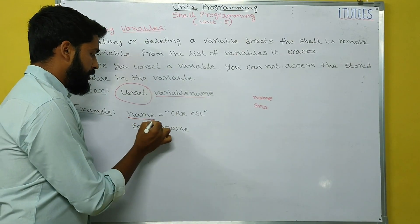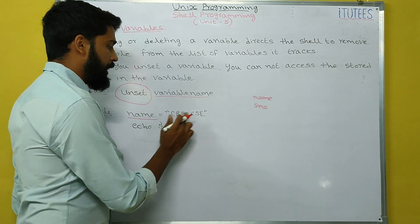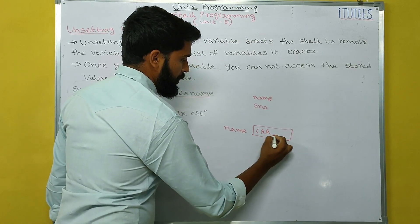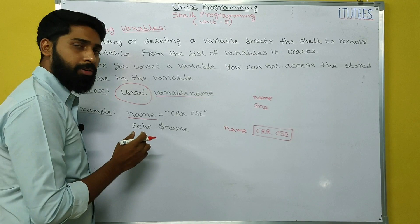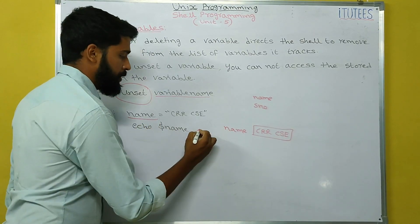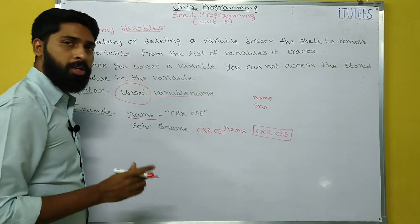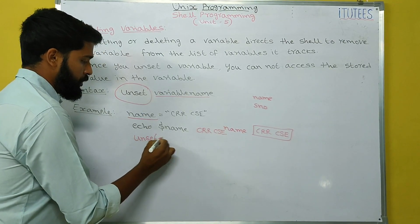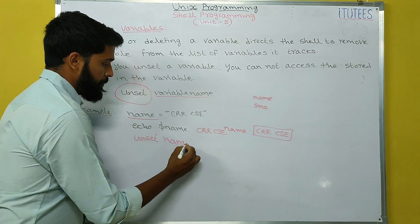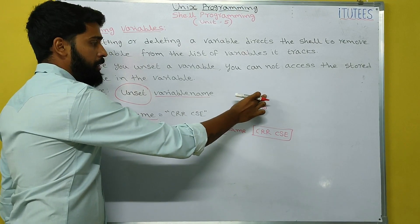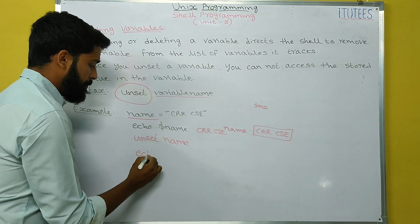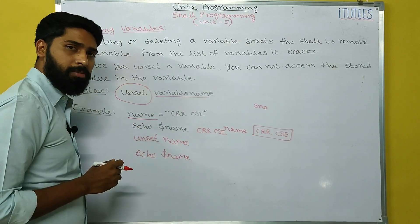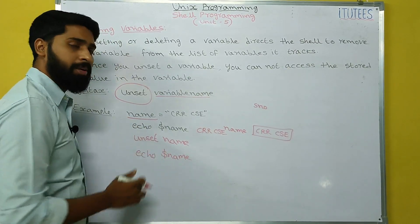For example, the variable name is initialized with CRRCsc — so name is the variable and its content is CRRCsc. If I try to access it with echo dollar name, it prints CRRCsc as output. Now if I want to delete this variable, I write: unset name. The name is deleted from the variable list. If I try to print name again, it does not print anything because the variable name is deleted.